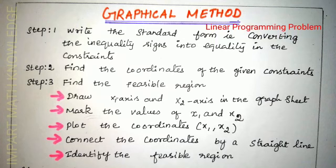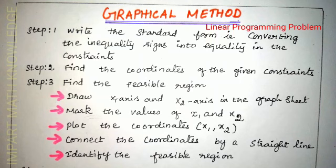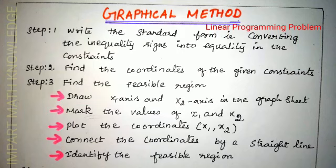Then you have to find the feasible region. For finding the feasible region you have to draw the x1 axis and x2 axis on the graph, then mark the values of x1 and x2, plot the coordinates of the given constraints, and connect the coordinates by a straight line. After that, identify the feasible region. If your constraints are less than or equal to type, shade below the line; if greater than or equal to type, shade above the line. The feasible region is the smallest possible region that covers all the constraints.